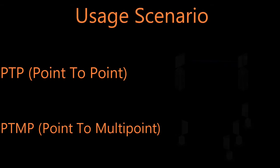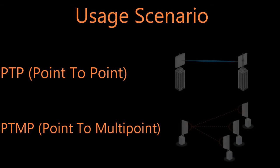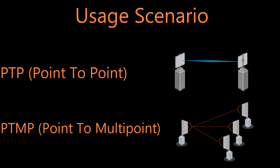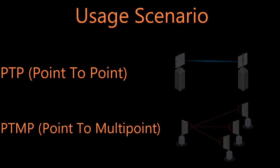There are two usage scenarios when creating a link. One is point-to-point, where you have one access point and one station. Two is point-to-multipoint, where you have one access point and multiple stations.